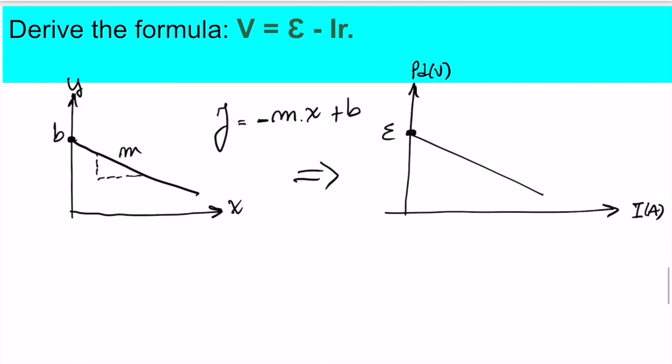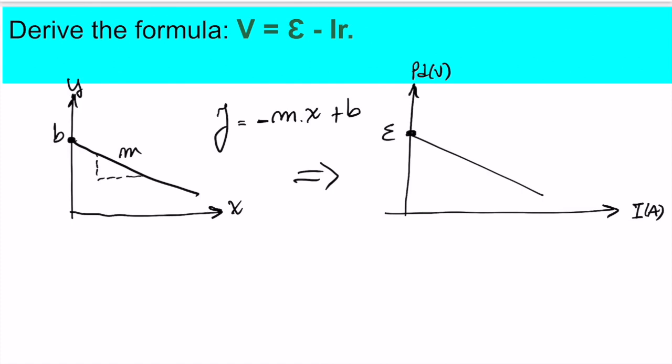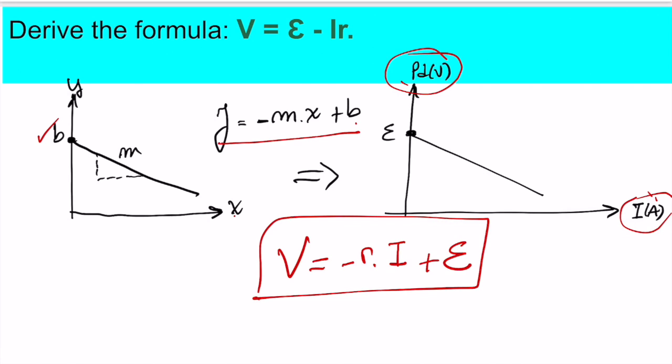If we are already used to the equation of a straight line y = mx + b where b is the independent term and m is the gradient, in this case negative, we can transform that into voltage against current. Y is potential difference, the gradient is the internal resistance multiplied by the current, and the independent term is the electromotive force. This explains the equation in the data booklet: the voltage across the terminals of the battery is the electromotive force minus the current multiplied by the internal resistance, V = ε - Ir.